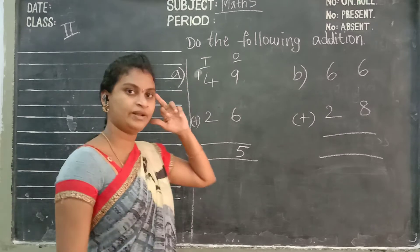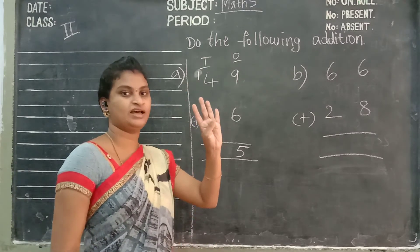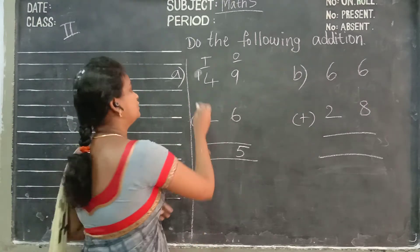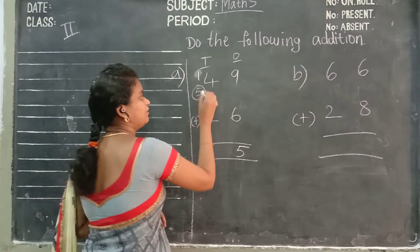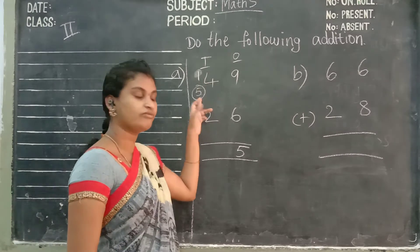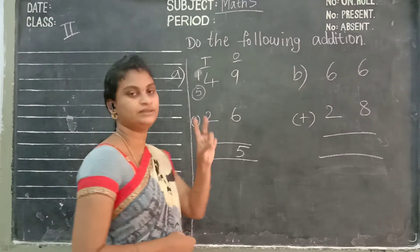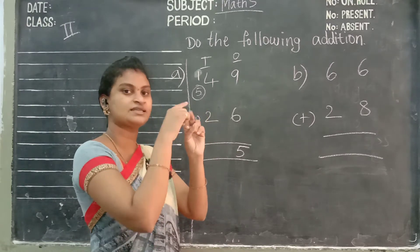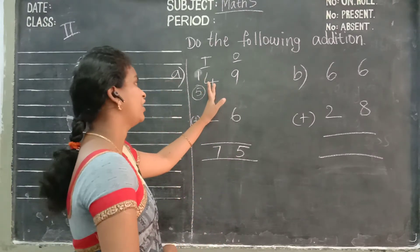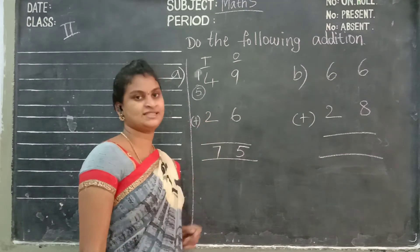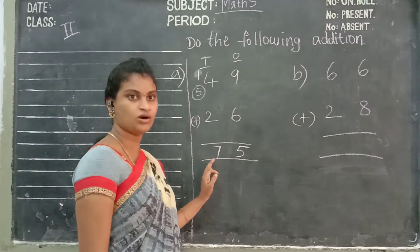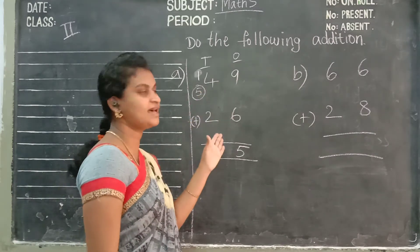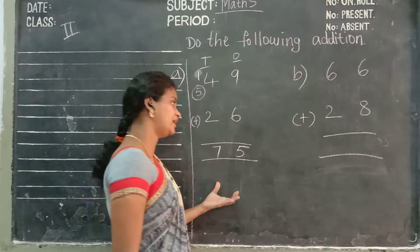1, keep in your mind. Take 4 fingers: 1 after 2, 3, 4, 5. Right here, 5. Keep in your mind, take 2 fingers: 5 after 6, 7. So 49 plus 26, answer is 75. 49 plus 26 equals 75.